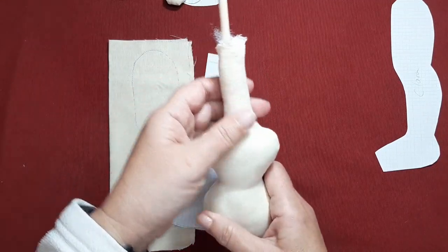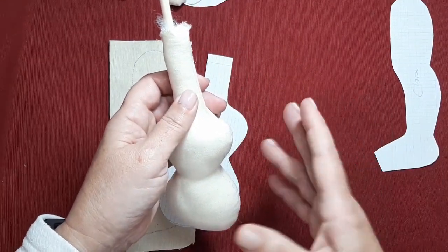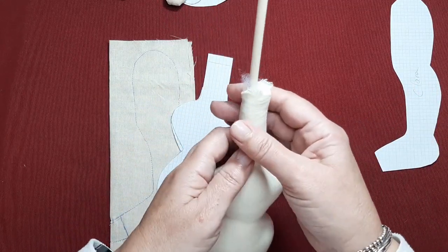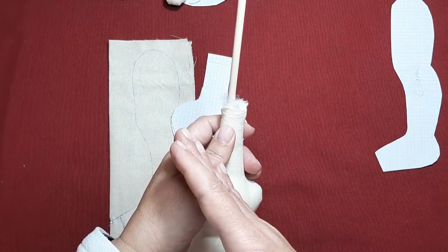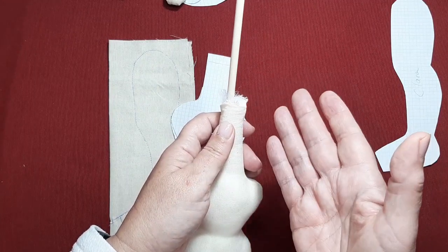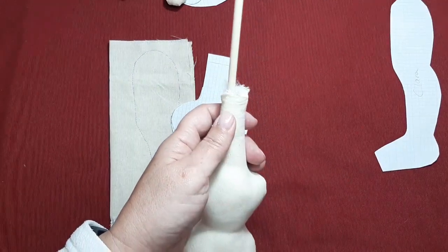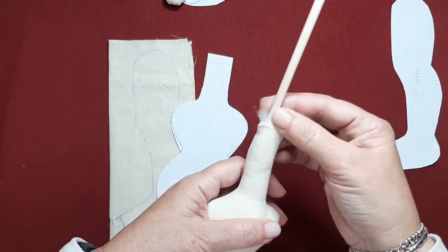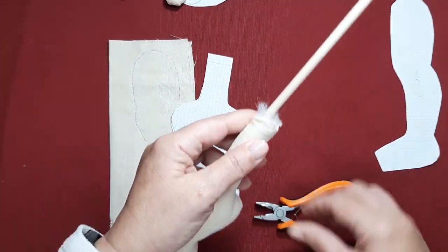Hoy Clara va a llevar, no sé aún si un peinado o un tocado, alguna cosa, pero lo que tengo en la mente necesito que tanto si le pongo pelo como si le pongo accesorios, necesito que tenga bastante sujeción. Por ello, veis que hoy tengo el palo. Es un palo de brocheta.